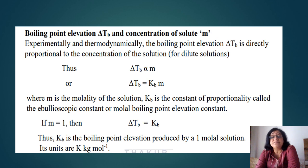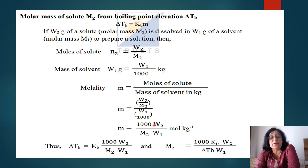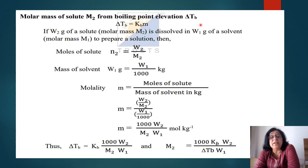The molar mass of the solute can be calculated using boiling point elevation. If W2 is the weight of the solute with molar mass M2, dissolved in W1 grams of solvent, then moles of solute n2 = W2/M2 and mass of solvent in kg = W1/1000. Molality m = (1000·W2)/(M2·W1), so ΔTb = Kb·(1000·W2)/(M2·W1), giving M2 = (1000·Kb·W2)/(ΔTb·W1).